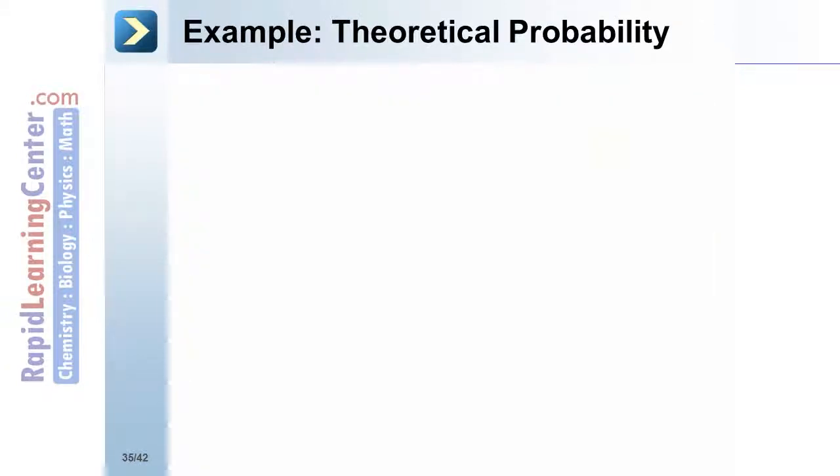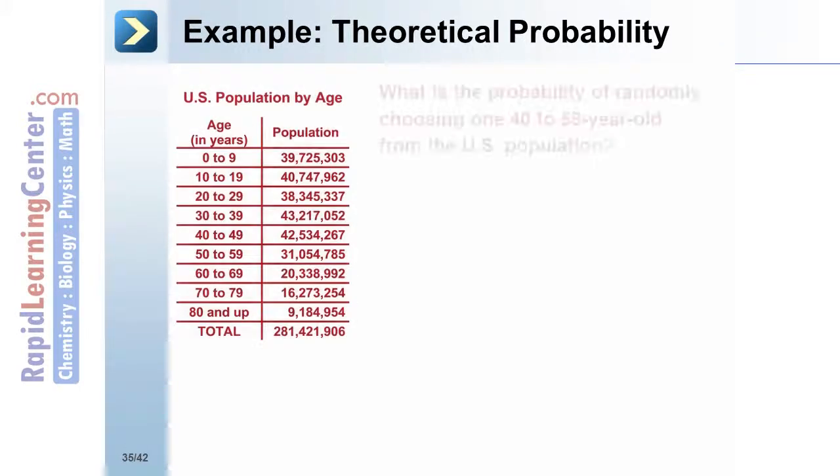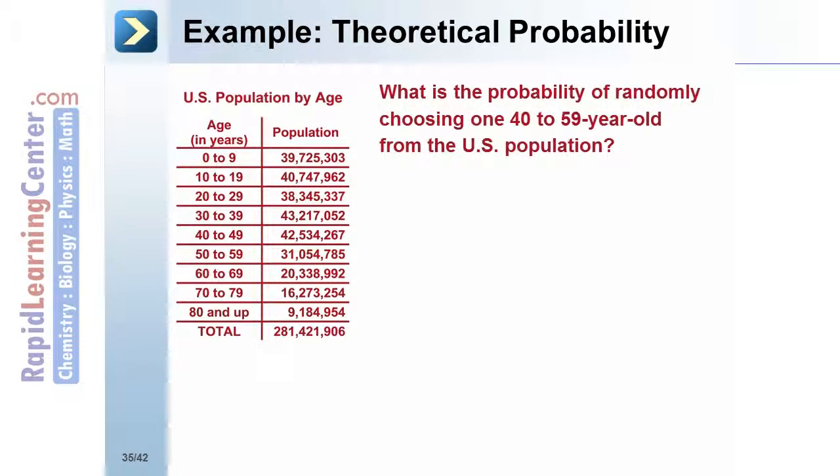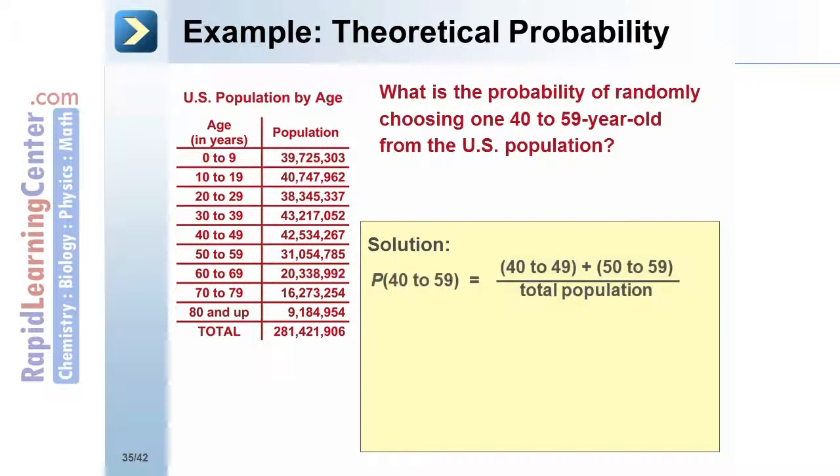Example: Theoretical Probability. What is the probability of randomly choosing one 40 to 59 year old from the US population? Solution: Use the frequency table to solve this problem. Add the number of 40 to 59 year olds to the number of 50 to 59 year olds, then put it over the total population of the US.